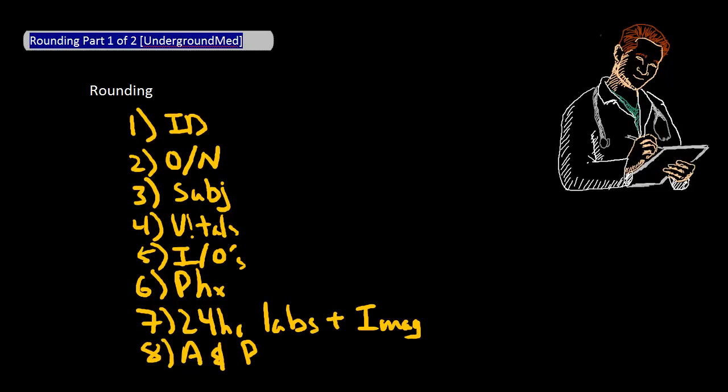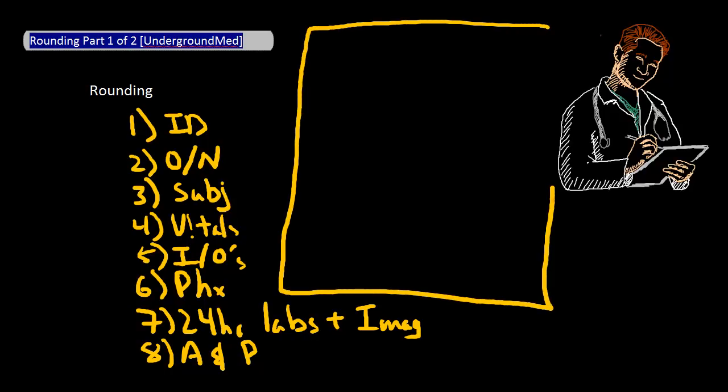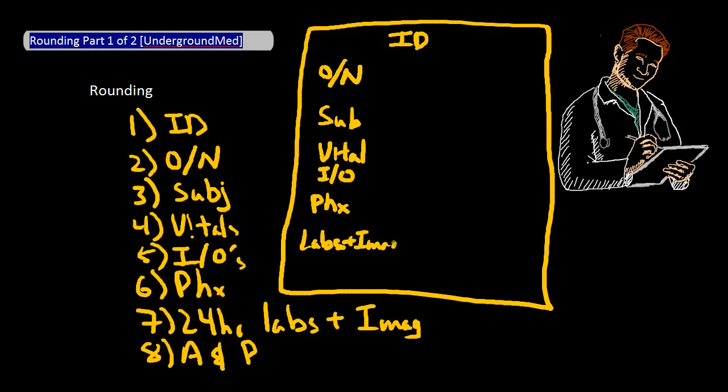To make this easier for myself, I usually write information down during pre-rounds in this order as well. So if you imagine that this is a piece of paper that you write your notes on, I write the patient ID up here, the overnight events here, the subjective here, vital signs here, ins and outs right underneath the vital signs, followed by the physical exam here, and then the labs as well as imaging down over here on the bottom left corner. And my assessment and plan usually goes at the bottom right corner.